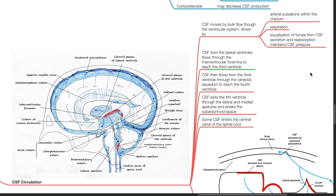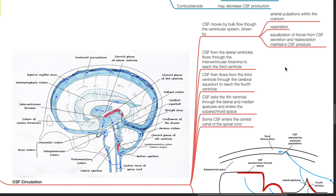CSF moves by bulk flow through the ventricular system, driven by arterial pulsations within the cranium, respiration, and equalization of forces from CSF secretion and reabsorption, which maintains CSF pressure.